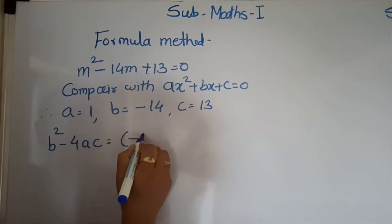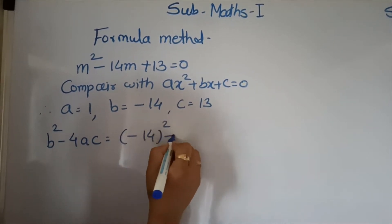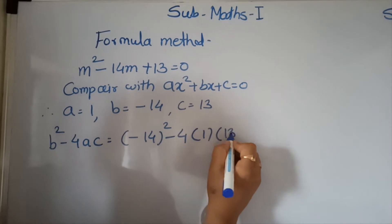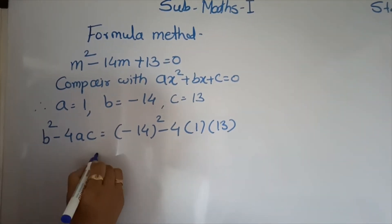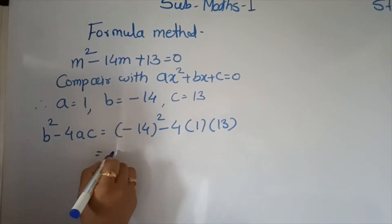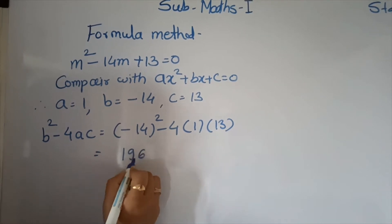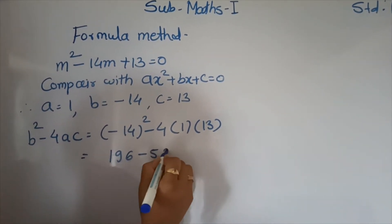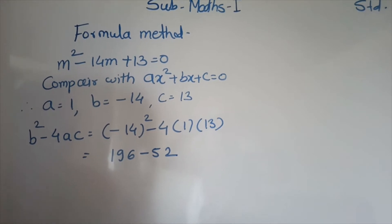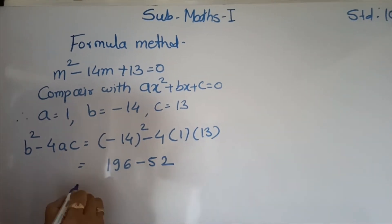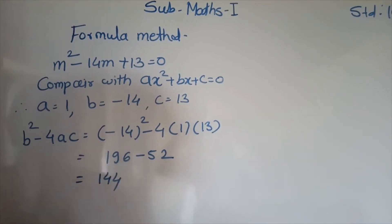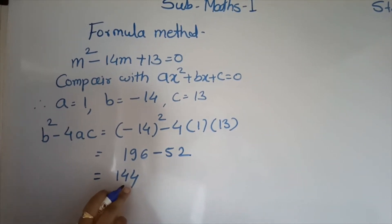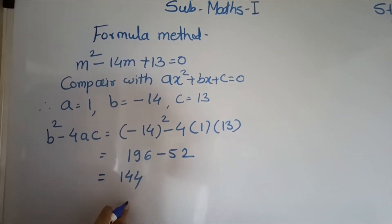b square means minus 14 square minus 4ac. What is 14 square? 196. 196 minus 4 times 1 times 13. 4 times 13 is 52. 196 minus 52 is equal to 144. The value of b square minus 4ac is 144.